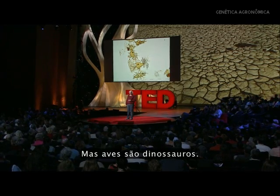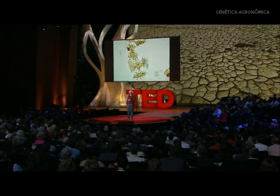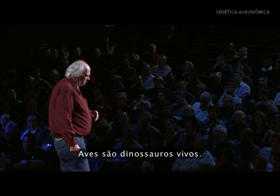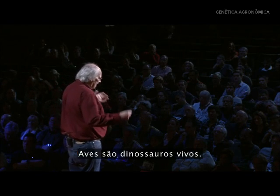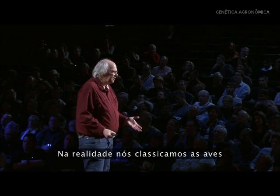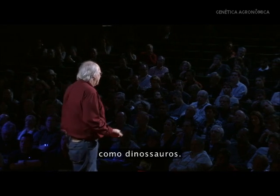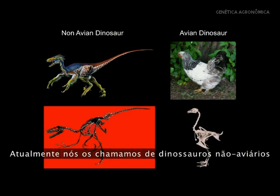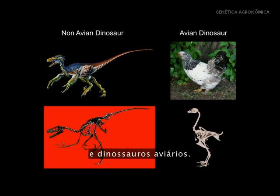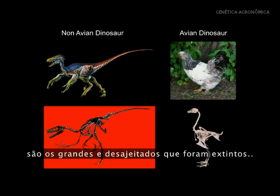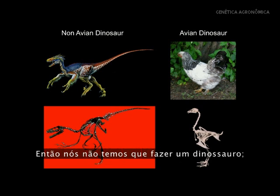Birds are living dinosaurs. We actually classify them as dinosaurs. We now call them non-avian dinosaurs and avian dinosaurs. The non-avian dinosaurs are the big clunky ones that went extinct. Avian dinosaurs are our modern birds. So we don't have to make a dinosaur.